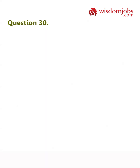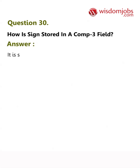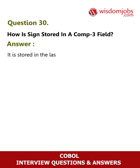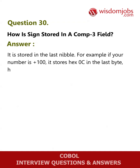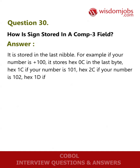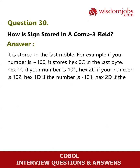Question 30: How is sign stored in a COMP3 field? Answer: It is stored in the last nibble. For example, if your number is +100, it stores hex 0C in the last byte; hex 1C if your number is 101; hex 2C if your number is 102; hex 1D if the number is -101; hex 2D if the number is -102.